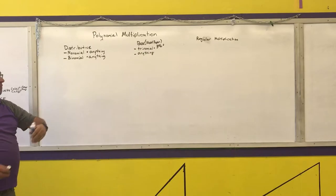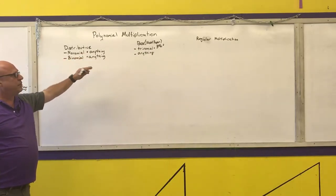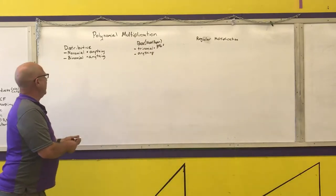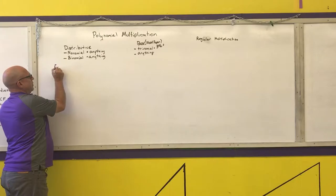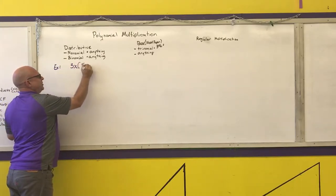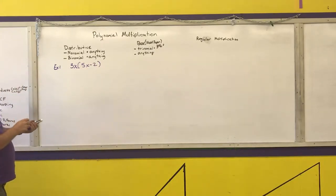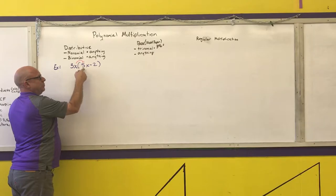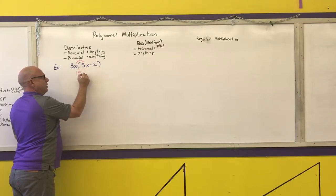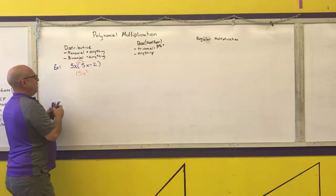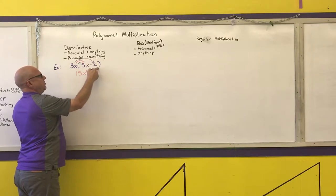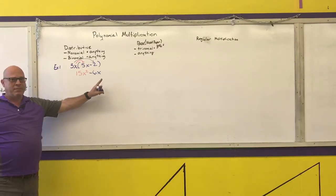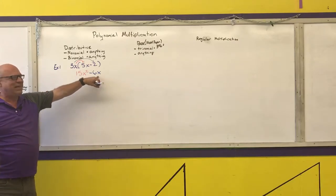I'm going to do a simple monomial times anything to show you the distributive method, and a binomial times a trinomial for all three methods. Example one: 3x times (5x − 2). For the distributive method, I prefer you use arrows. 3x times 5x is 15x squared, and 3x times negative 2 is negative 6x. You cannot combine these further — that's your final answer.